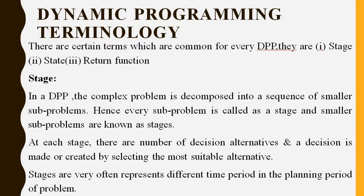Now we move on to dynamic programming terminology. There are certain terms or concepts common to every dynamic programming problem: stage, state, and return functions. We shall discuss each one. A stage is a sub-problem into which the complex problem is decomposed. Every sub-problem is called a stage. At each stage there are a number of decision alternatives, and a decision is made by selecting the most suitable alternative. Stages very often represent different time periods in the planning period of a problem.